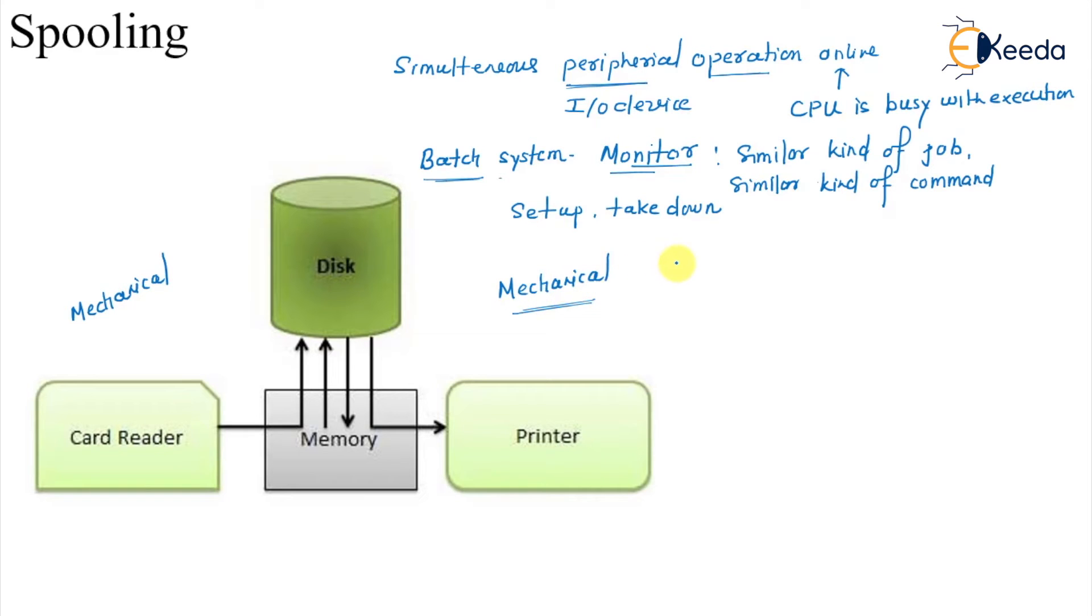The main issue here in this case is that speed of CPU and speed of this device which is a card reader and the printer. Earlier and now also there is a speed mismatch. The speed at which CPU works and that speed at which card reader and printer mechanical devices work.